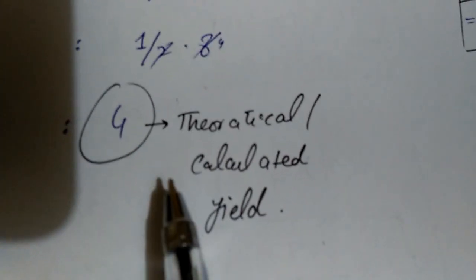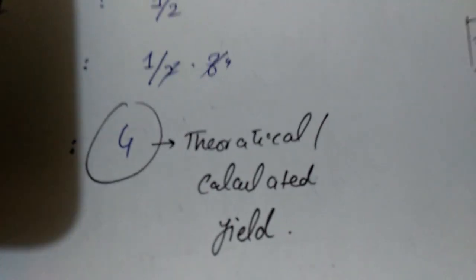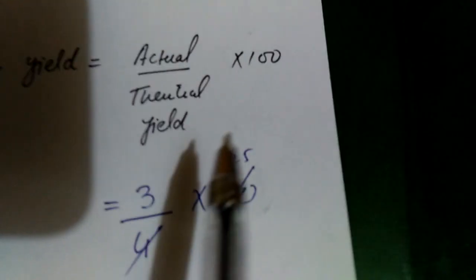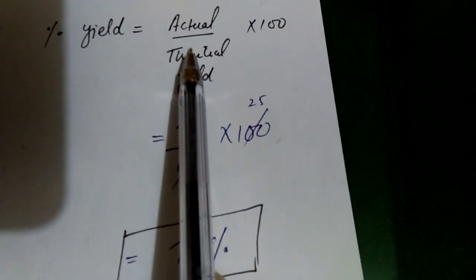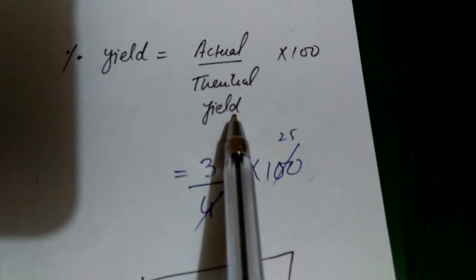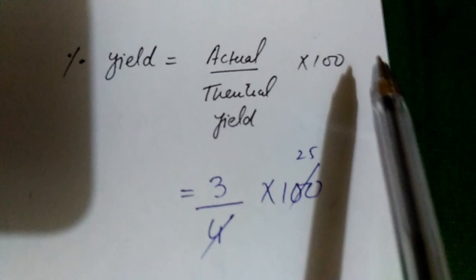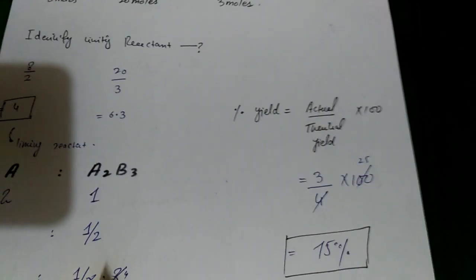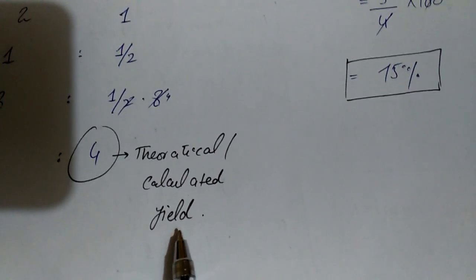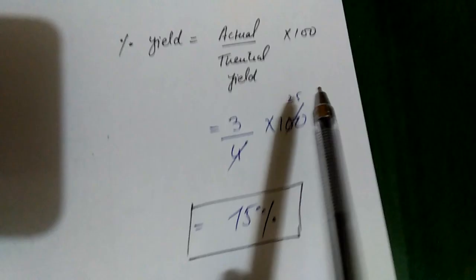The value we calculated is the theoretical yield. The value given in the reaction is the actual (experimental) yield. To find the percentage yield, we apply the formula: percentage yield equals actual yield divided by theoretical yield, multiplied by 100. In this example the percentage yield comes out to 75%. So we identify the limiting reactant, find theoretical yield, then apply the formula.